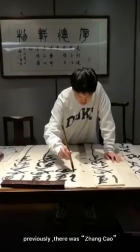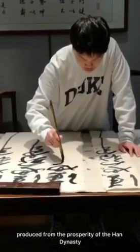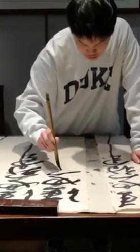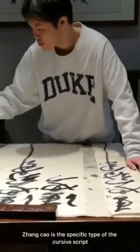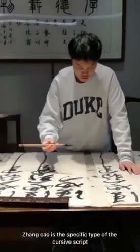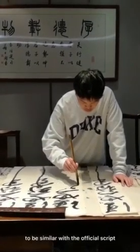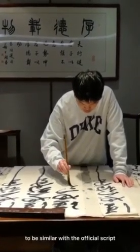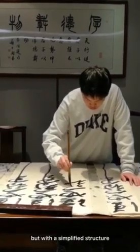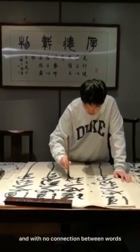Previously, there was 章草, produced from the prosperity of the Han dynasty. 章草 is a specific type of the cursive script, similar to the official script but with a simplified structure and with no connections between words.